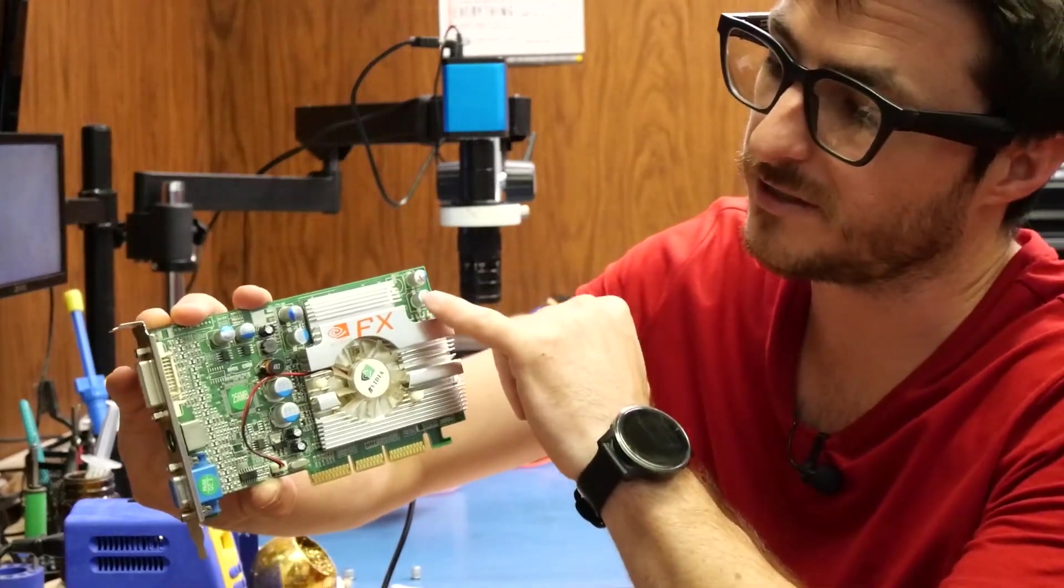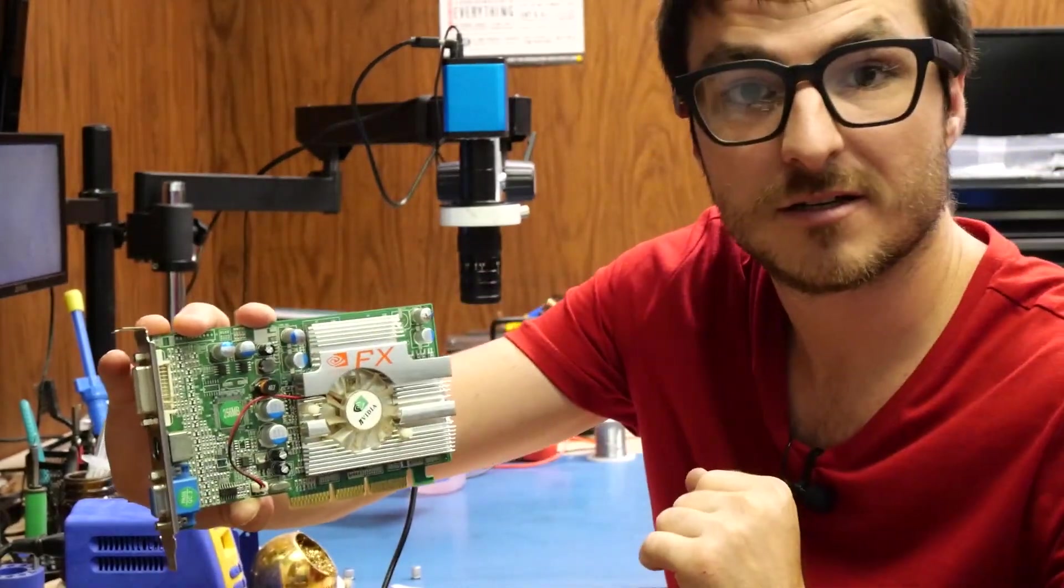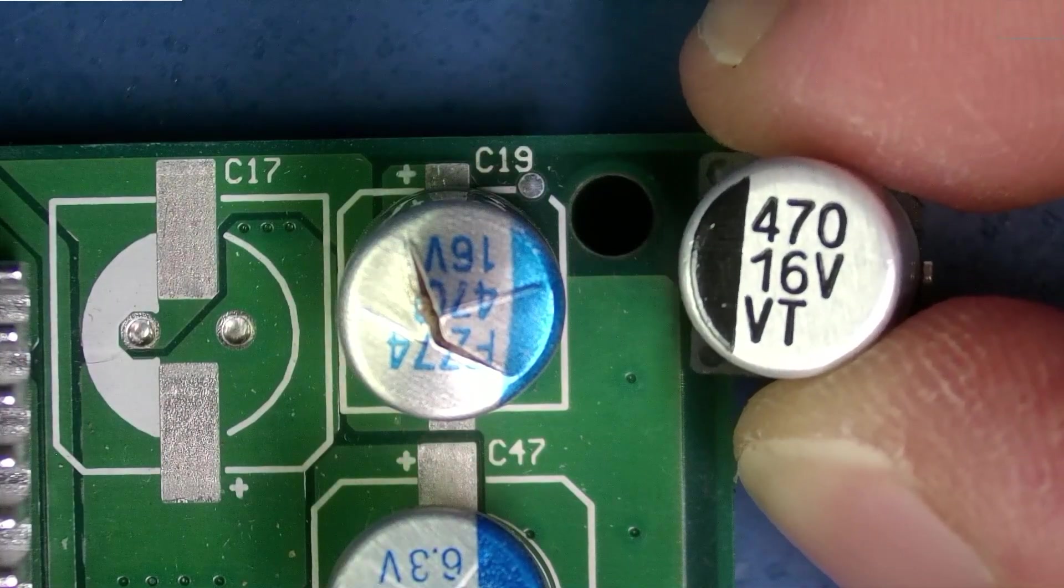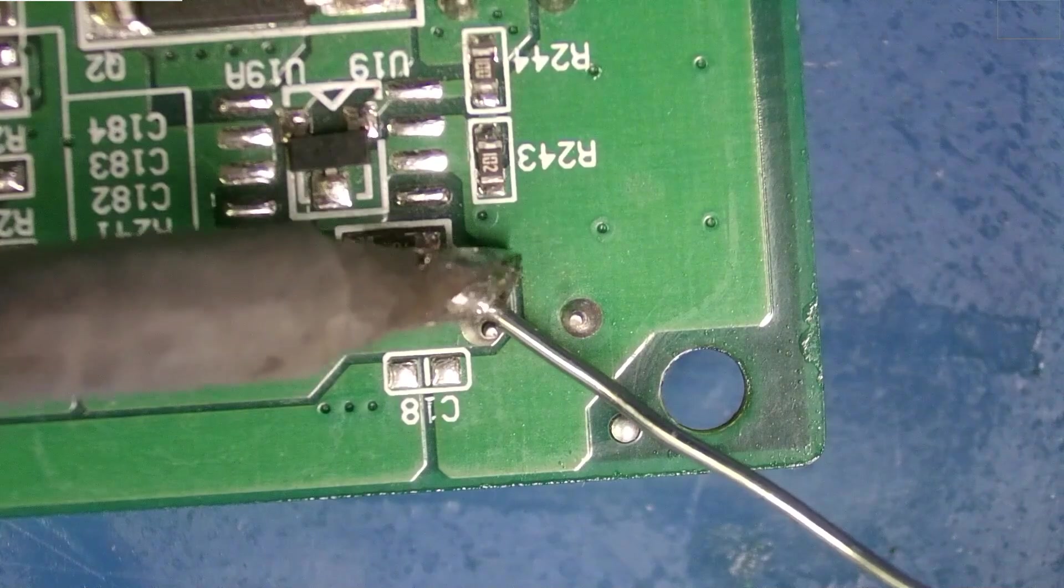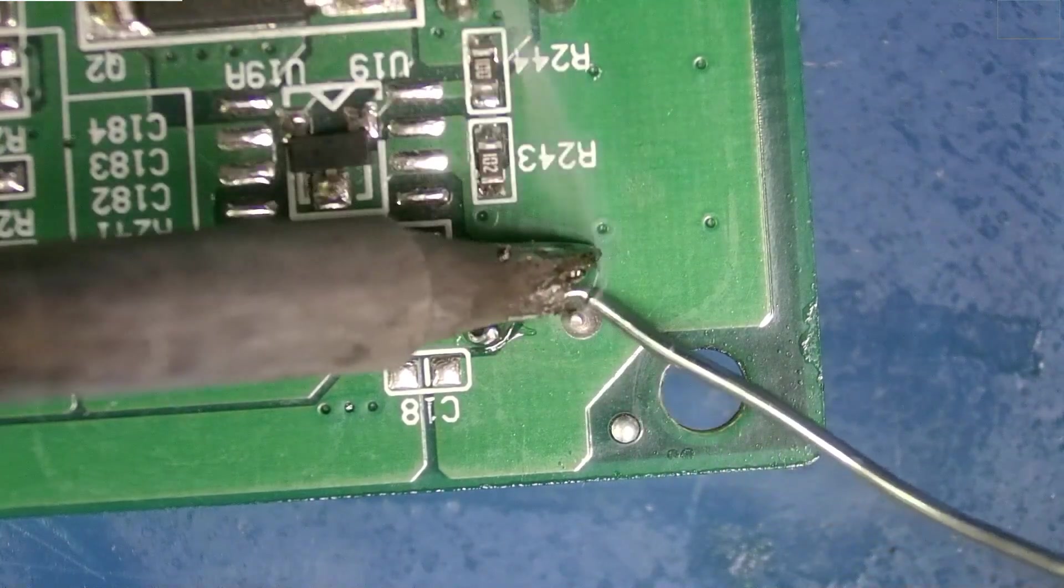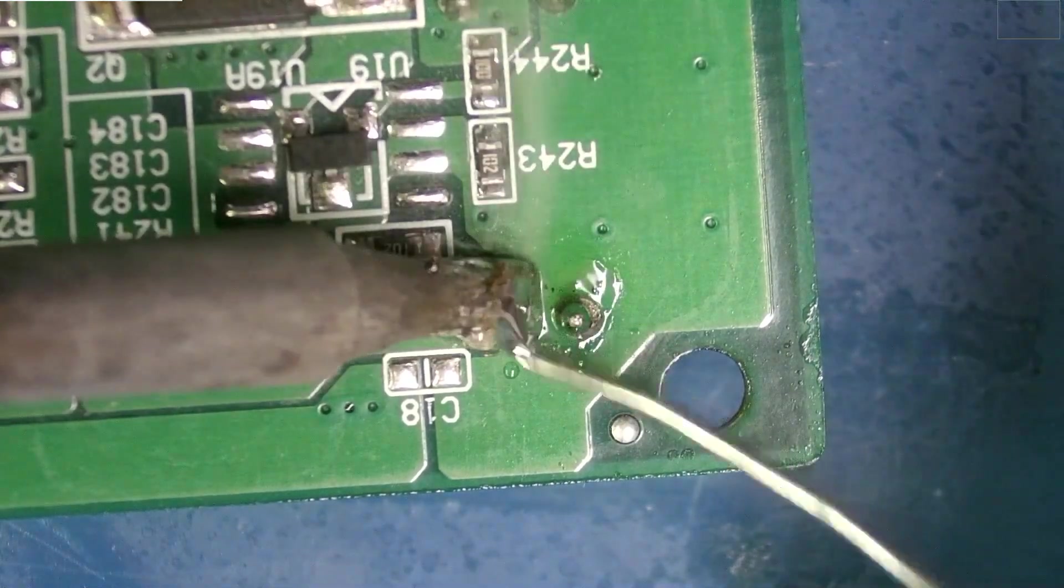So this is an NVIDIA FX 5600 graphics card that was given to us for repair, and we're going to be replacing all of these aluminum capacitors. Our first one right here is 470 microfarad, 16 volts. What I'm going to do is start by adding some solder to both of our pins.